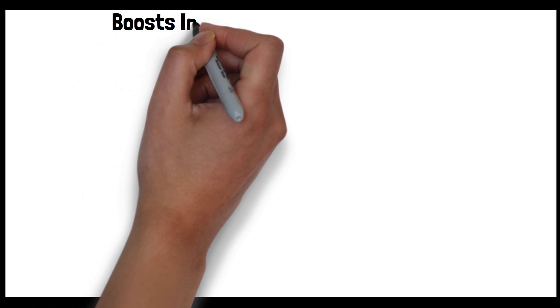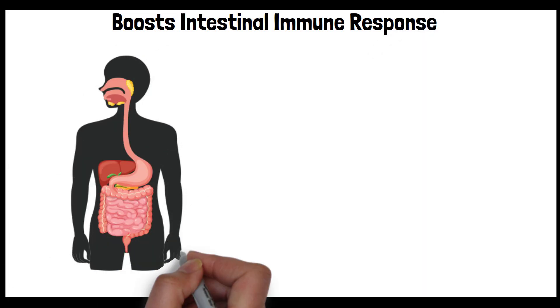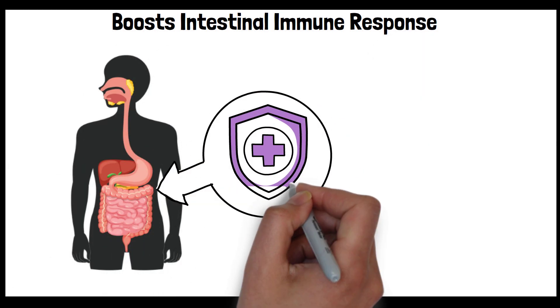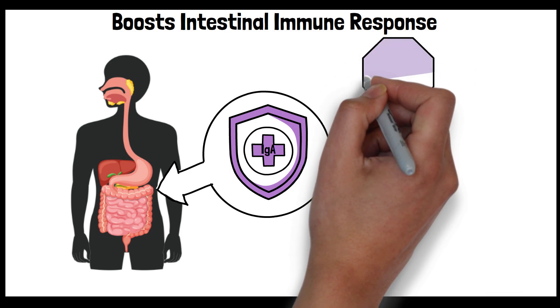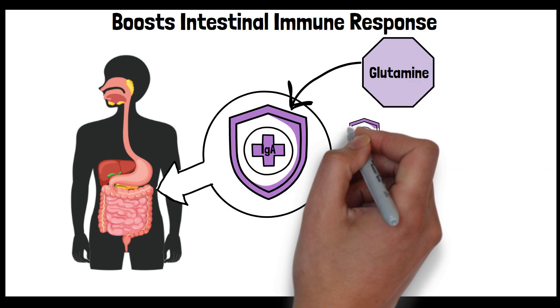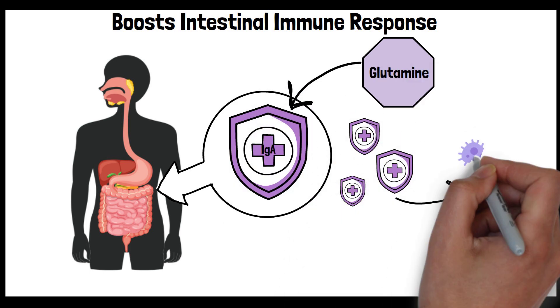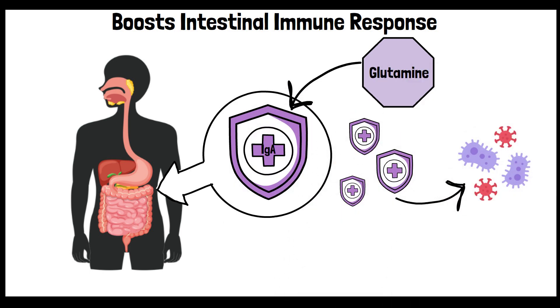Eight, boosts intestinal immune response. Secretory immunoglobulin A, also known as IgA, is an antibody that plays a critical role in immune function within the gut. Glutamine assists in the production of these antibodies, thereby enhancing the gut's ability to fight off pathogens that enter through the digestive tract.